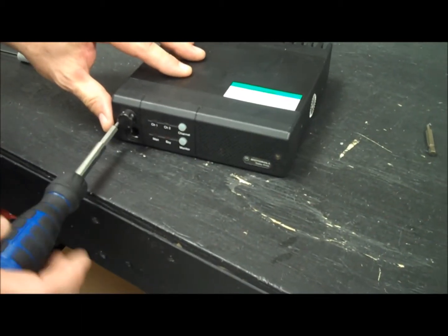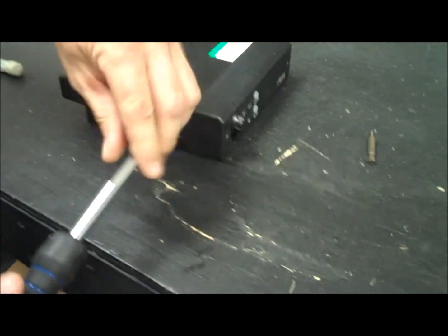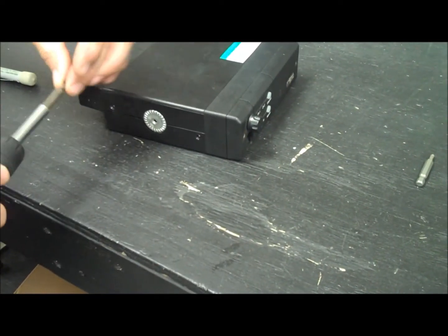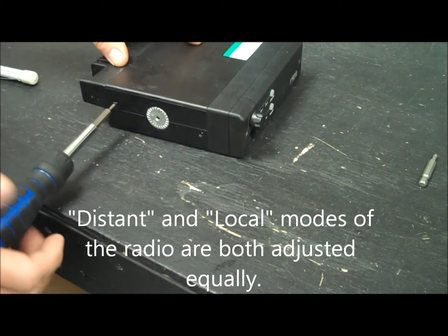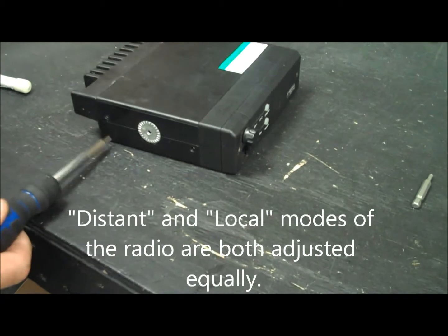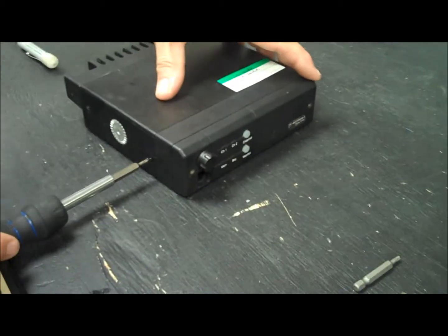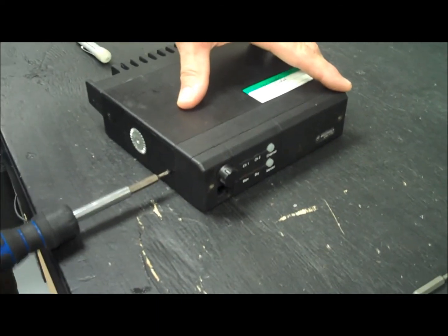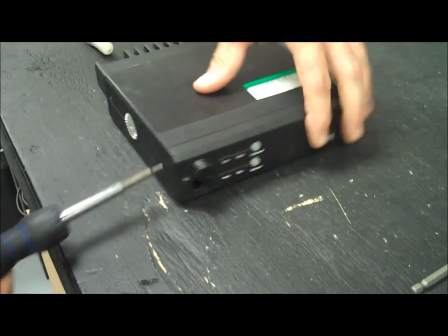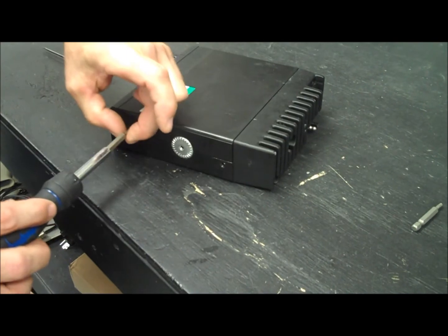Fasten the front screws and the side ones. Now I've just increased the squelch of the radio for both channels, modes that might be used in the distance and the local settings. All in less than three minutes.